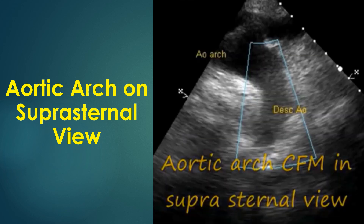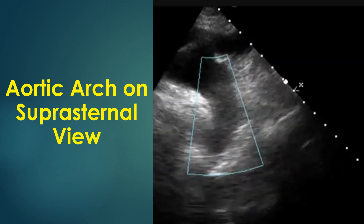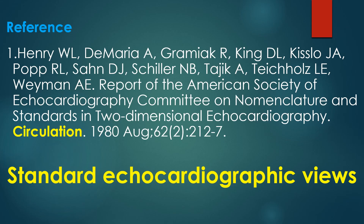This is sometimes useful when the gradient is not picked up well in the apical five-chamber view. Here is the citation for a good article with line drawings illustrating various echocardiographic views and orientation of cardiac chambers in each view. Free full text is available online.